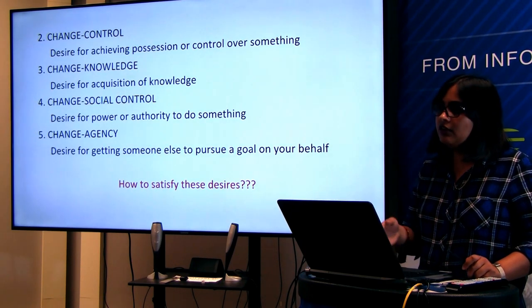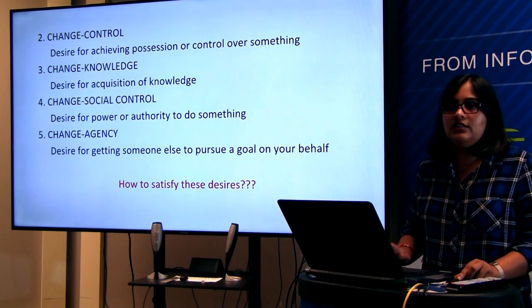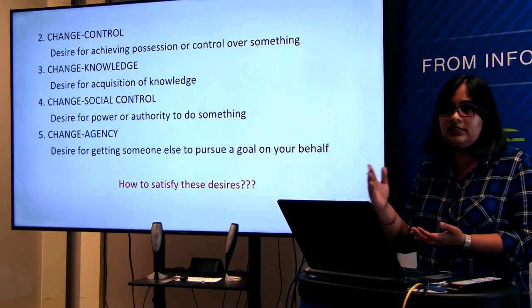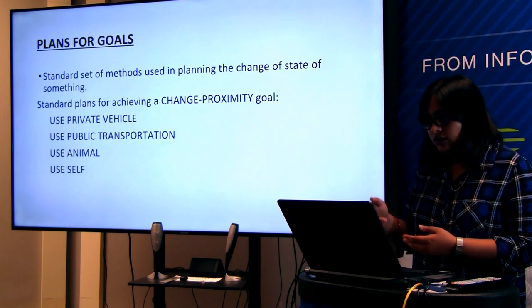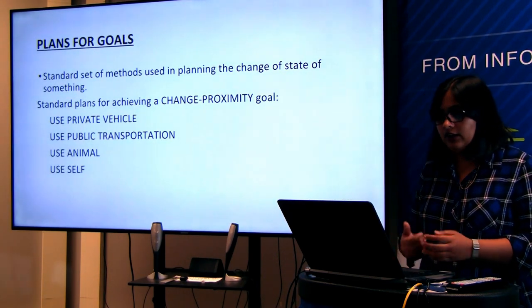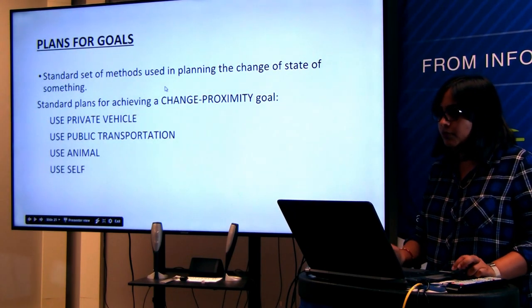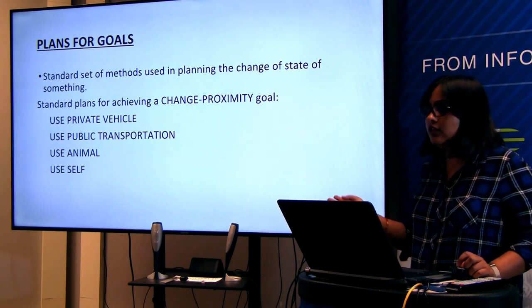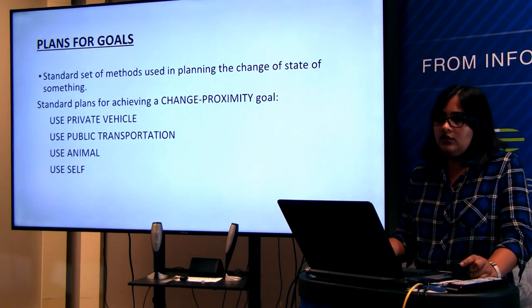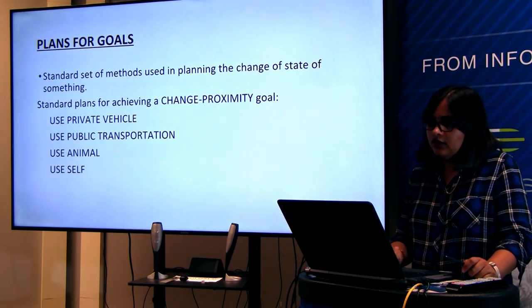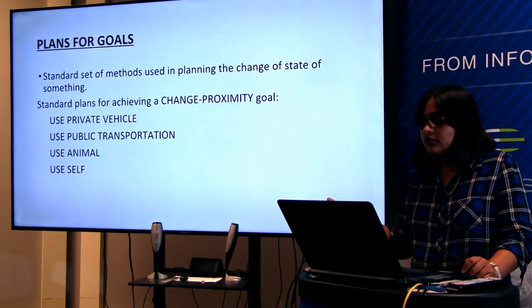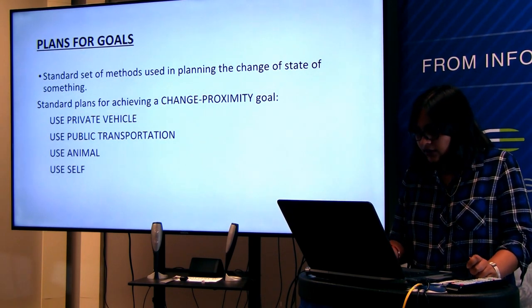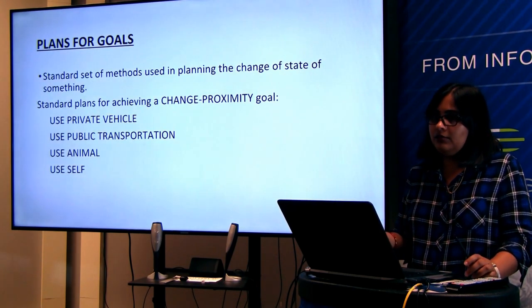How do we satisfy these desires? We need goals and plans. There is a standard set of methods used in planning a state change. Standard plans for achieving a change of proximity: use a private vehicle, use public transportation, use an animal, or yourself — just walk. These are the sub-plans of the ultimate goal. For example: Frank wanted to go to the Bahamas. He picked up a newspaper. The first sentence gives us that Frank wants to change his proximity.